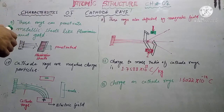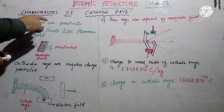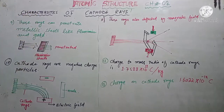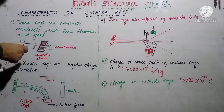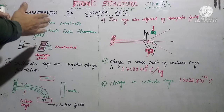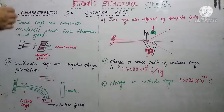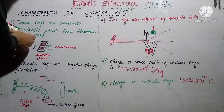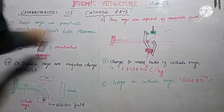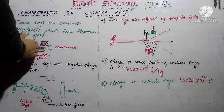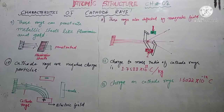Characteristic number 9: these rays can penetrate metallic sheets like aluminum and gold. When cathode rays are placed in the path of aluminum or gold sheets, they can penetrate because cathode rays have high penetrating power.